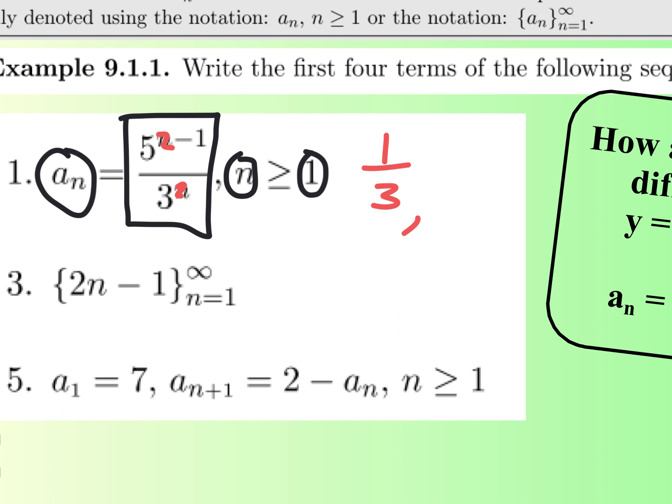Five to the two minus one is... what is the top going to be? Five. Five over three squared is nine. So five ninths. Raise your hand if you had five ninths. Now if you look at those two, don't go and try to find the common difference because it's not quite that easy. Let's just find the third term — everybody stick in three and figure out the third term.